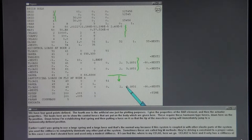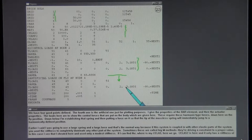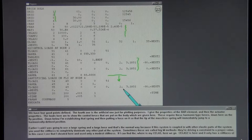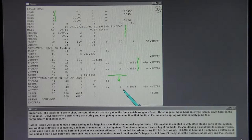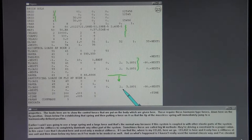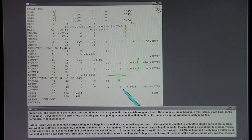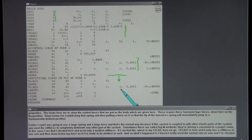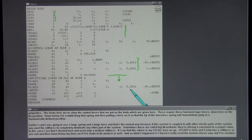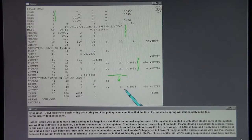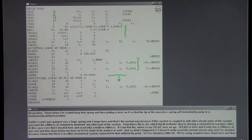Earlier I said I was going to use a large spring and a large force, and that's the normal way. Because if this system is coupled with other elastic parts, you want the stiffness to completely dominate any other part of the system. Sometimes these are called Big M methods. They're driving a constraint to a proper value. In this case I cheated here and used only a modest stiffness.